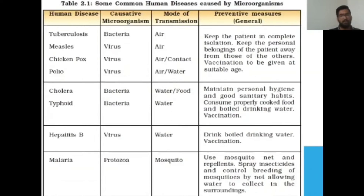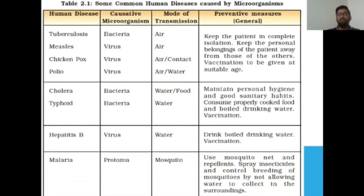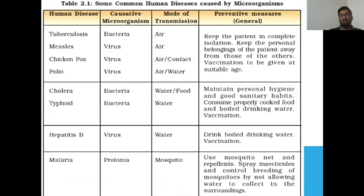Polio is caused by a virus and transmitted through air or water. Preventive measures include keeping the patient in complete isolation, keeping the personal belongings of the patient away from others, and ensuring vaccination is given at a suitable age.